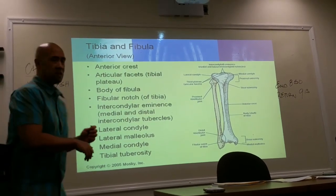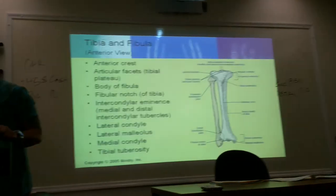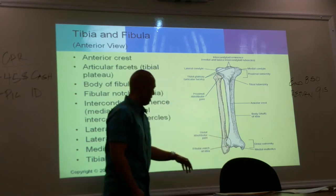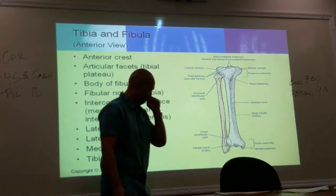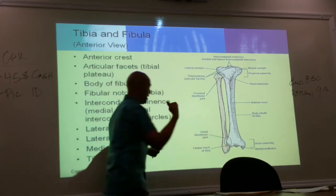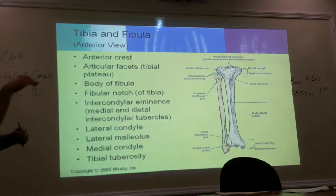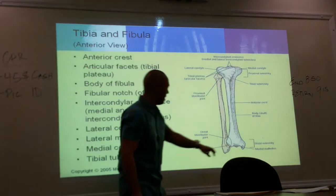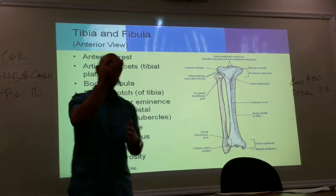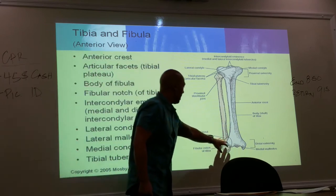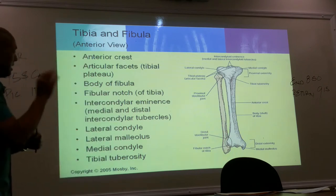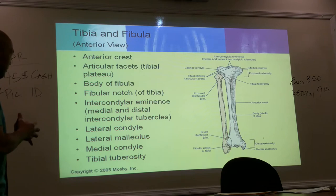We covered the distal part of the tib-fib, so we're familiar with this part of the extremity. You have the lateral malleolus and the medial malleolus. There is a smooth surface or indentation of the tibial bone where the distal fibula articulates — a notch on the tibia. This area is known as the distal tibiofibular joint.